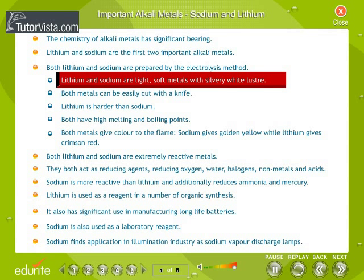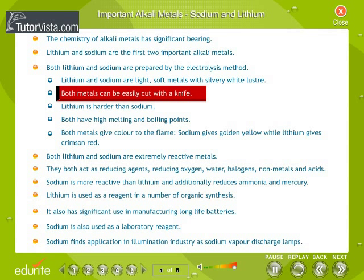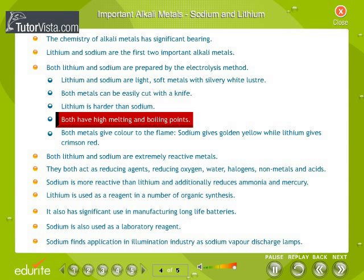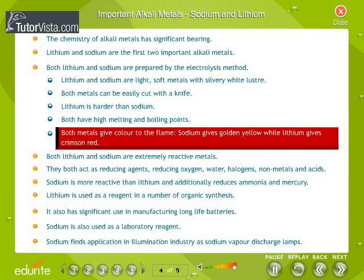Lithium and sodium are light, soft metals with silvery-white luster. Both metals can be easily cut with a knife, though lithium is harder than sodium. Both have high melting and boiling points. Both metals give color to the flame — sodium gives golden yellow, while lithium gives crimson red.